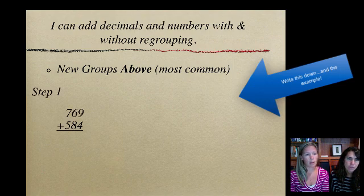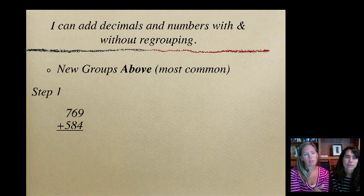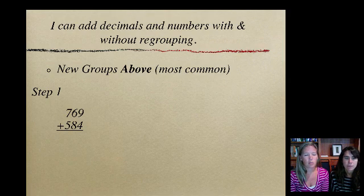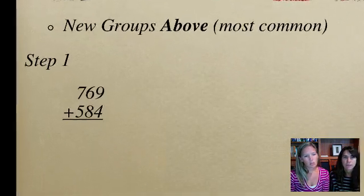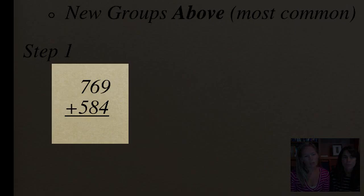So the first step when you've got a problem, you'll write this problem down. You're going to see there's like three different versions that we show. Just keep it on one problem. So, 769 plus 584. They're lined up correctly. We've got the ones and the tens and the hundreds all lined up together. So you add up the ones column first.